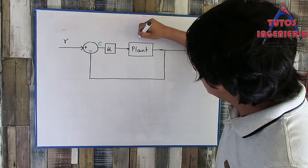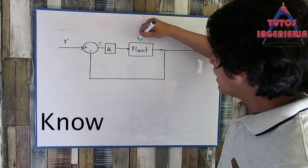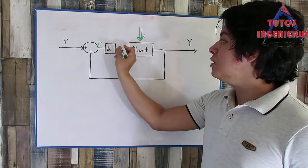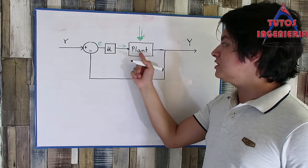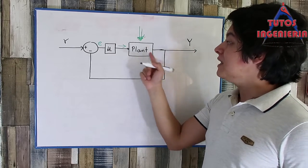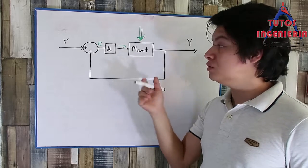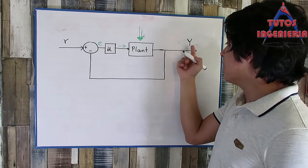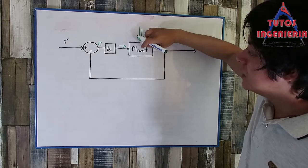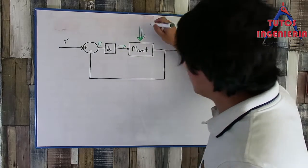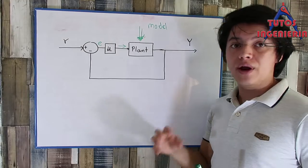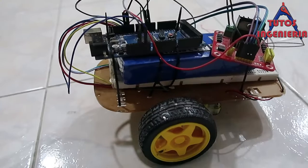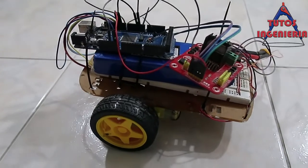However, there is a problem: we have to know how this plant works. The controller tries to send a signal to the plant to move the output, but if we don't know how the plant responds to the input signal, it could respond in ways we don't want. We have to develop a model of the plant — a mathematical model that links the input and the output.